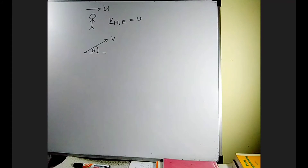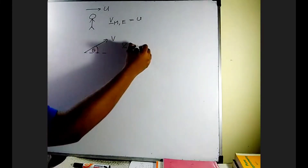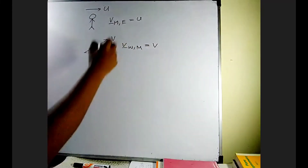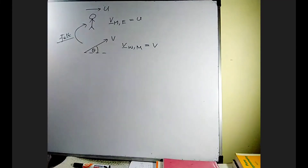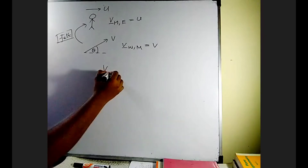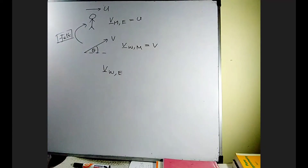We can find the velocity of wind with respect to man — that is the velocity of wind felt by this person. The idea is to apply the relative velocity theorem.